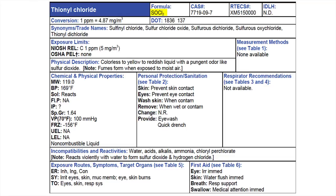Next, does this chemical polymerize? There are three places to check: the formula for an equal sign, the DOT for a three-digit number ending in P, and incompatibilities and reactivities for the word 'polymerize.' None of those apply — this chemical does not polymerize. Then I want to know if it's toxic. I go to the IDLH — ND, not determined. That doesn't mean it's not toxic. I go to the secondary toxic box, the exposure limit box. The NIOSH REL ceiling is one part per million — never to be above that level without respiratory protection. Yes, this is toxic. You must wear respiratory protection.